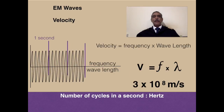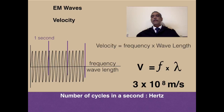Let us establish a very simple relationship. Velocity, since it is a constant, is equal to frequency multiplied by wavelength, and for all practical purposes we can consider it as 3 × 10^8 meters per second. The unit of frequency is hertz (cycles per second), and wavelength is in meters. That is the velocity and the correlation between the parameters we have defined.